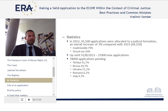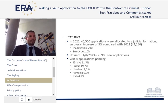Currently we have 78,000 applications pending, and these applications are concentrated: five countries make up basically two-thirds of all applications. Turkey has 31%, followed by Russia — which is no longer a contracting party but the court still retains residual jurisdiction in Russian cases — then Ukraine, Romania, Italy, and some other countries. Resolving the backlog in some of these countries would significantly reduce the overall pending caseload and allow the court to function more effectively.